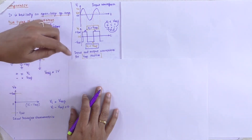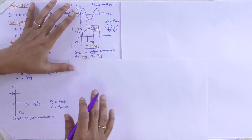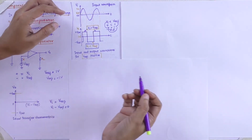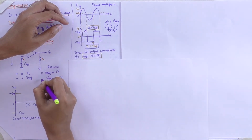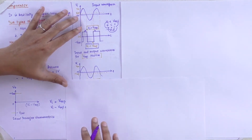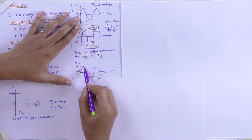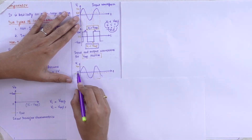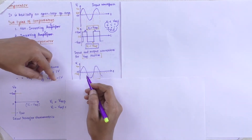Coming to the next topic, we assume V reference voltage is negative. In that condition, V reference is minus 1 V. Again a sine waveform is drawn with maximum input voltage Vm considered as 5 V, with 0 V at the center line and negative V reference considered as minus 1 V.